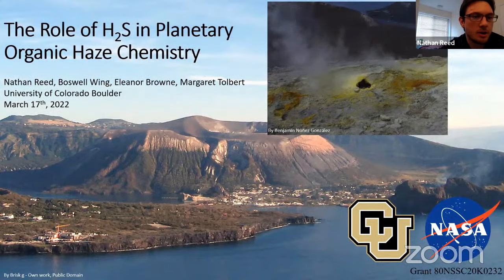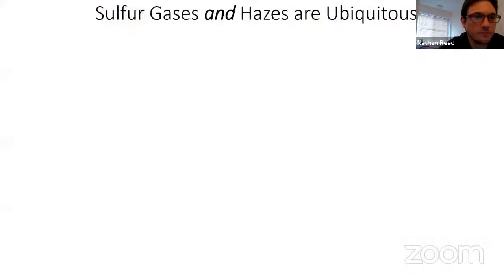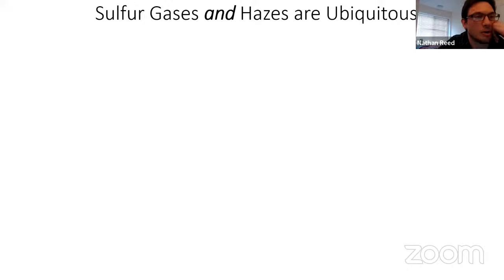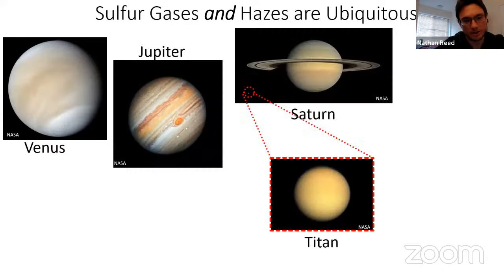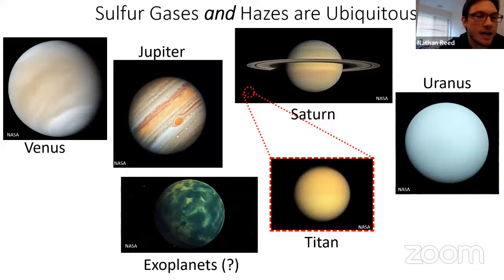Along with H2S, I'll be talking about organic haze chemistry. Sulfur gases and organic hazes are ubiquitous in planetary atmospheres — in our solar system, both are quite common on Venus, Jupiter, Saturn, Titan, and Uranus. Even beyond our solar system, exoplanets likely have sulfur gases and organic hazes. Today I'll focus on the early Earth example of sulfur gases and organic haze.